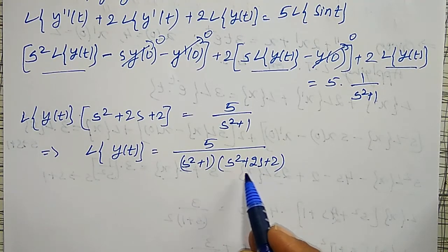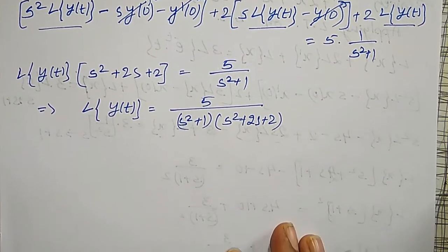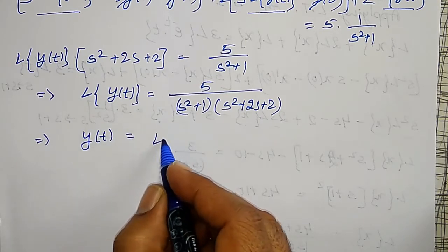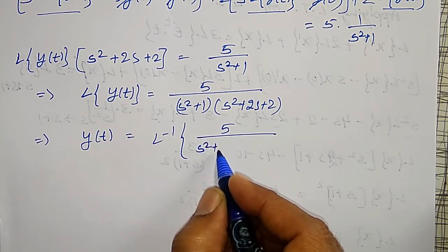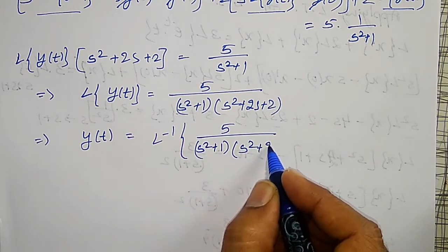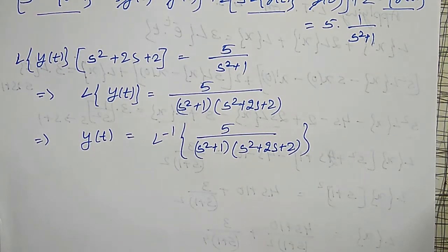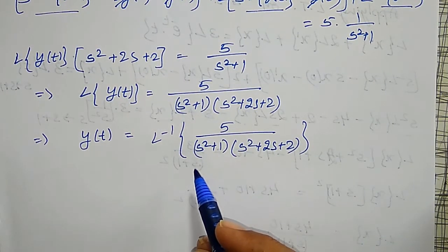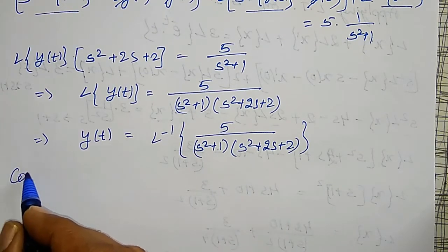The linear factors of this are not straightforward. So y(t) = inverse Laplace transform of 5 / [(s² + 1)(s² + 2s + 2)]. I have to find the inverse Laplace transform of this — I will use partial fractions.